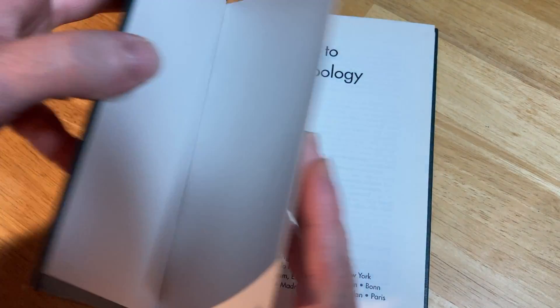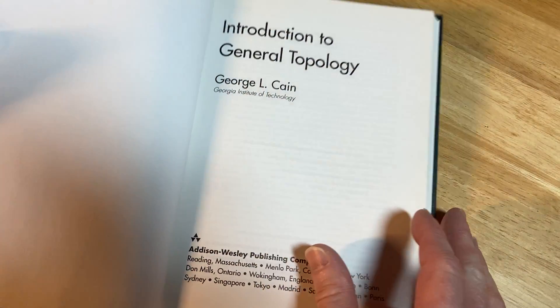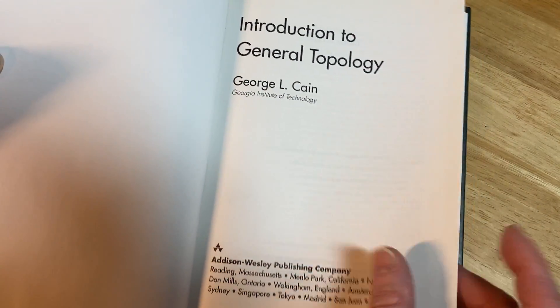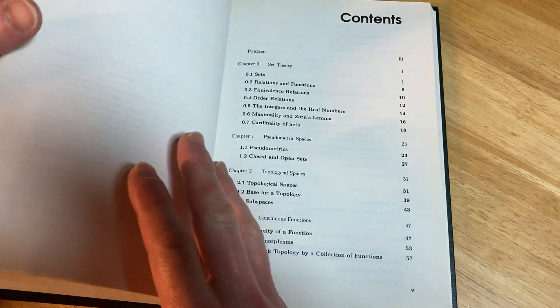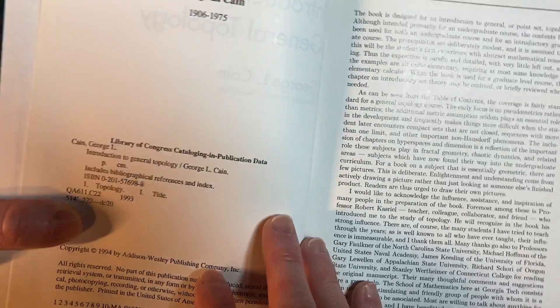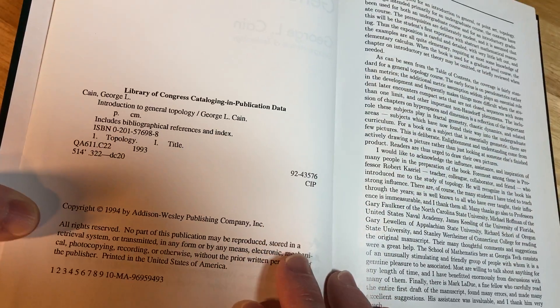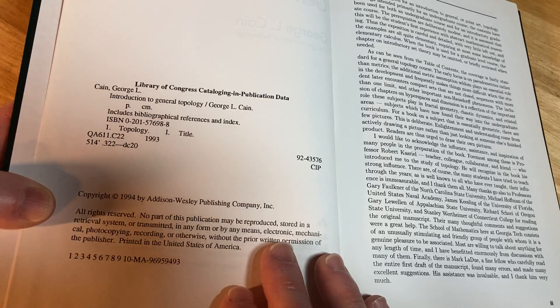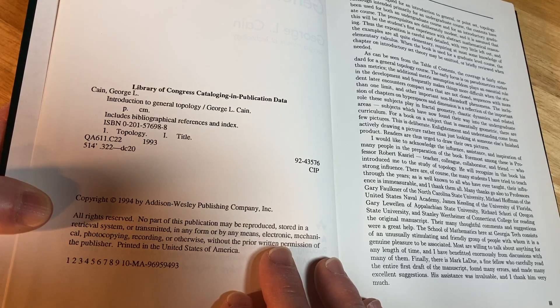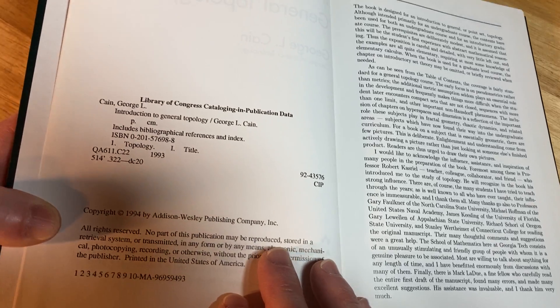Let's open it up and take a look. Georgia Institute of Technology, Introduction to General Topology. Let's see if we can find the copyright, see how old this is. To the Memory of George L. Cain, 1906-1975. Copyright 1994. Interesting.